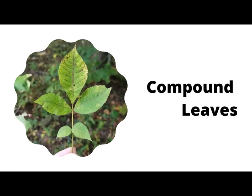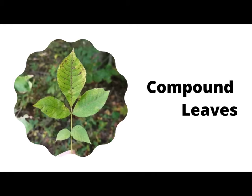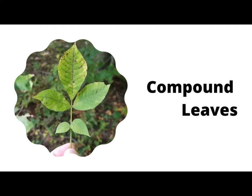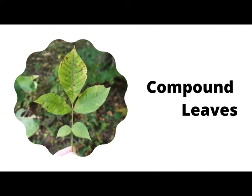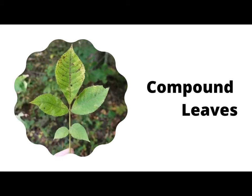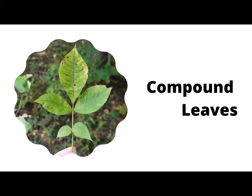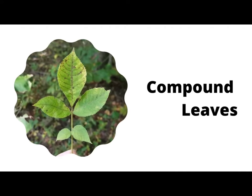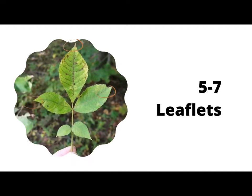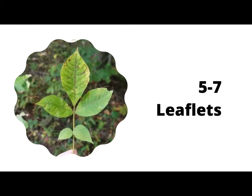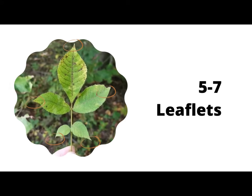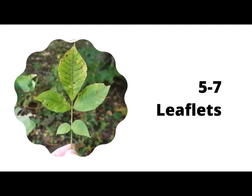The leaves of a shagbark hickory are compound leaves, meaning it is a leaf composed of leaflets. Shagbark hickory trees have five to seven leaflets and each leaf is arranged in an alternate pattern.